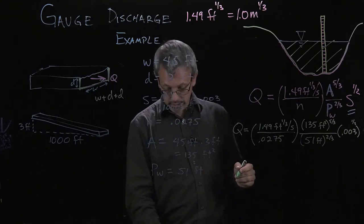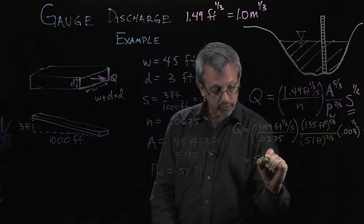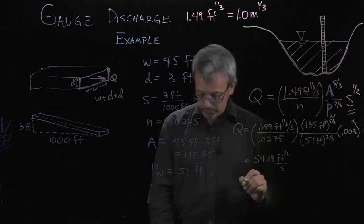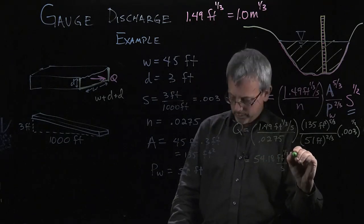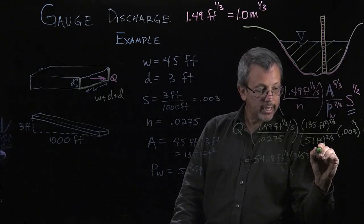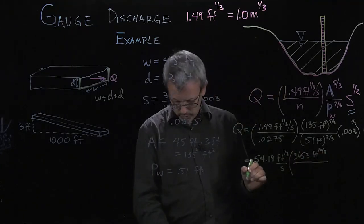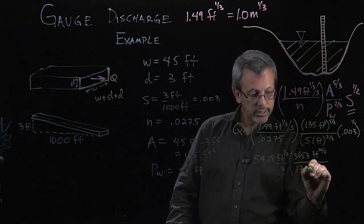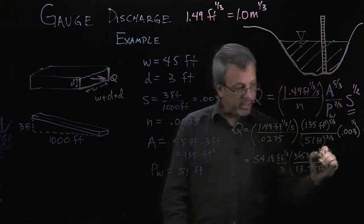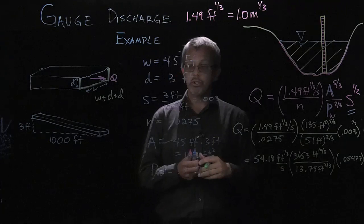If I put those values in, plugging in a few more values here, I get, I believe this is 54.18 feet to the 1 third per second, keeping my units here. I have 3,653 feet to the 10 thirds. Notice feet squared to the 5 third power is the 10 thirds. Over 13.75 feet to the 2 thirds. And then the value here is a unitless value of 0.05477. Trying to keep about four significant digits here.